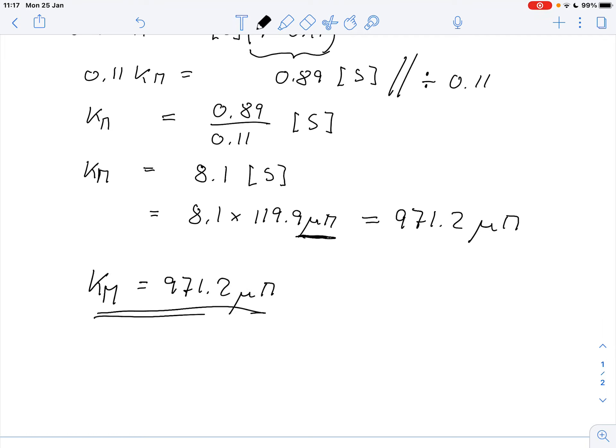And this is how we can calculate Km values if we've got the rate as a fraction of Vmax and we have a substrate concentration. I hope this makes sense. So thank you very much for watching.